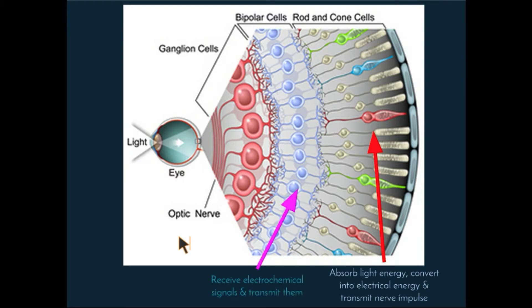The bipolar cell layer receives the electrochemical signals from the rods and cones and transmits the signal from the photoreceptors to the next layer of cells, the ganglion cells. So the bipolar cells are an intermediate between the rods and cones and the ganglion cells.